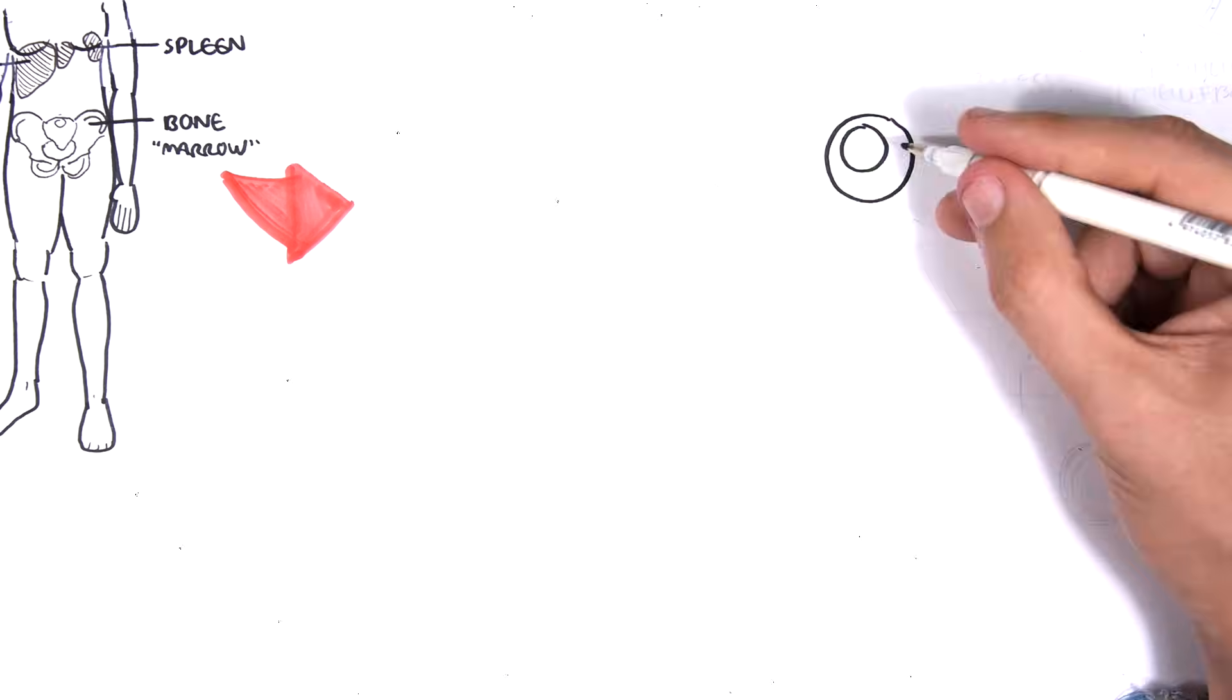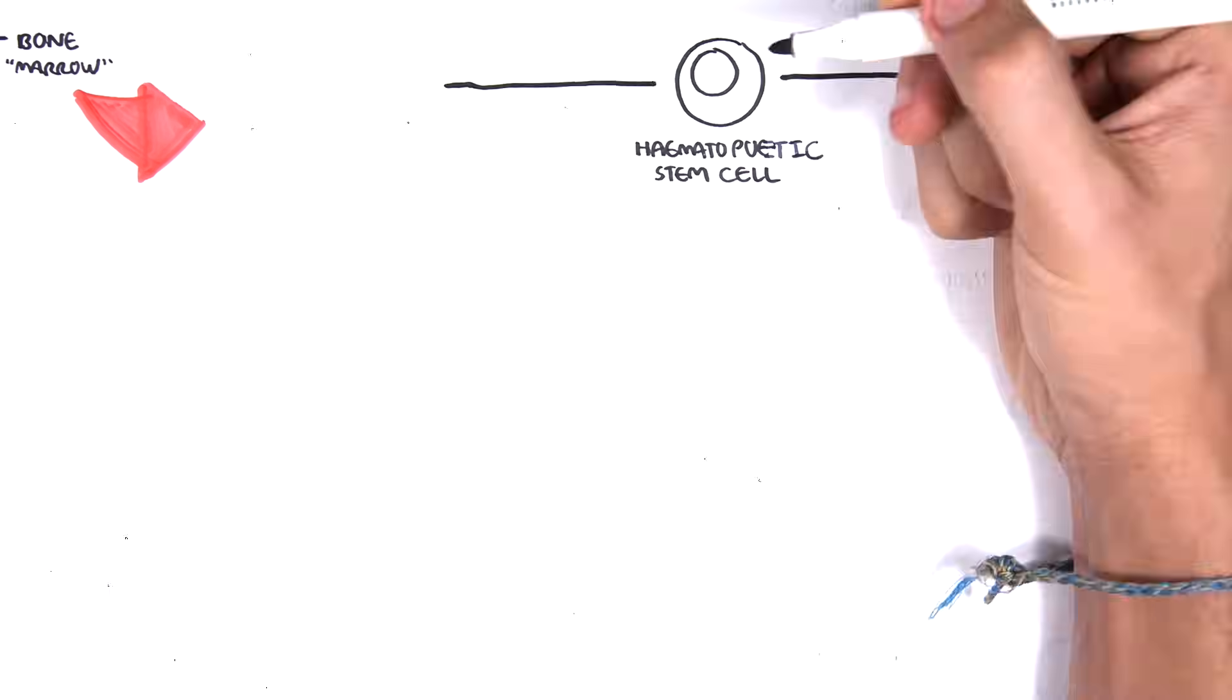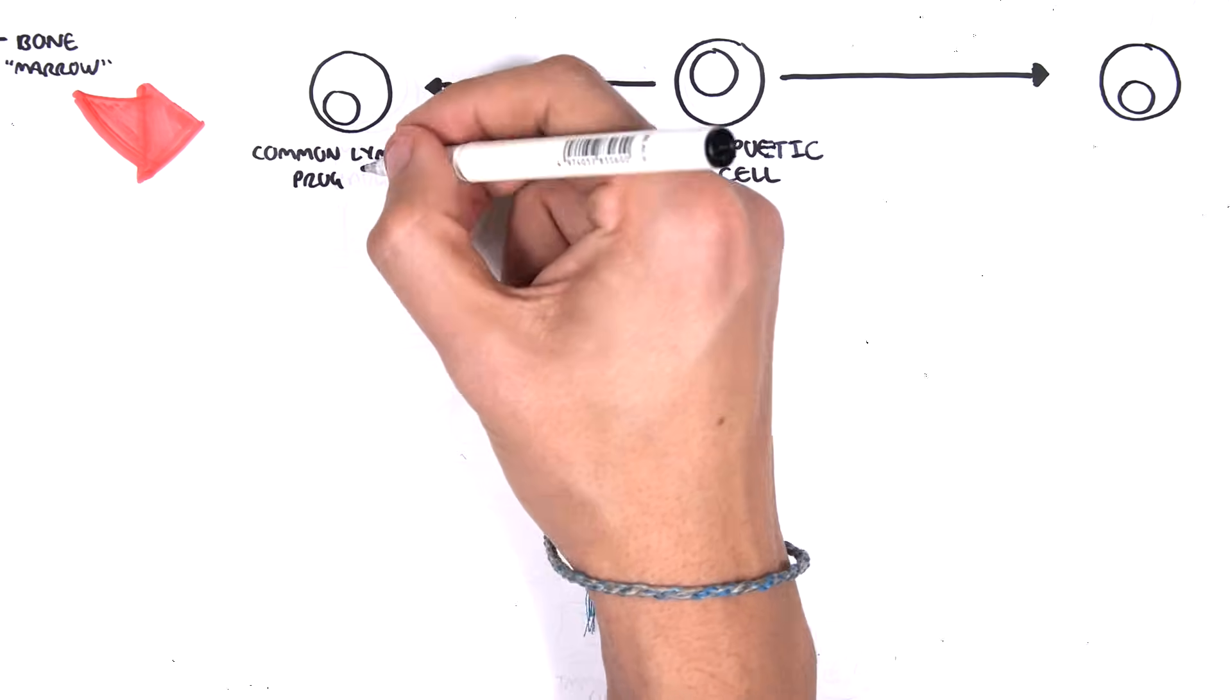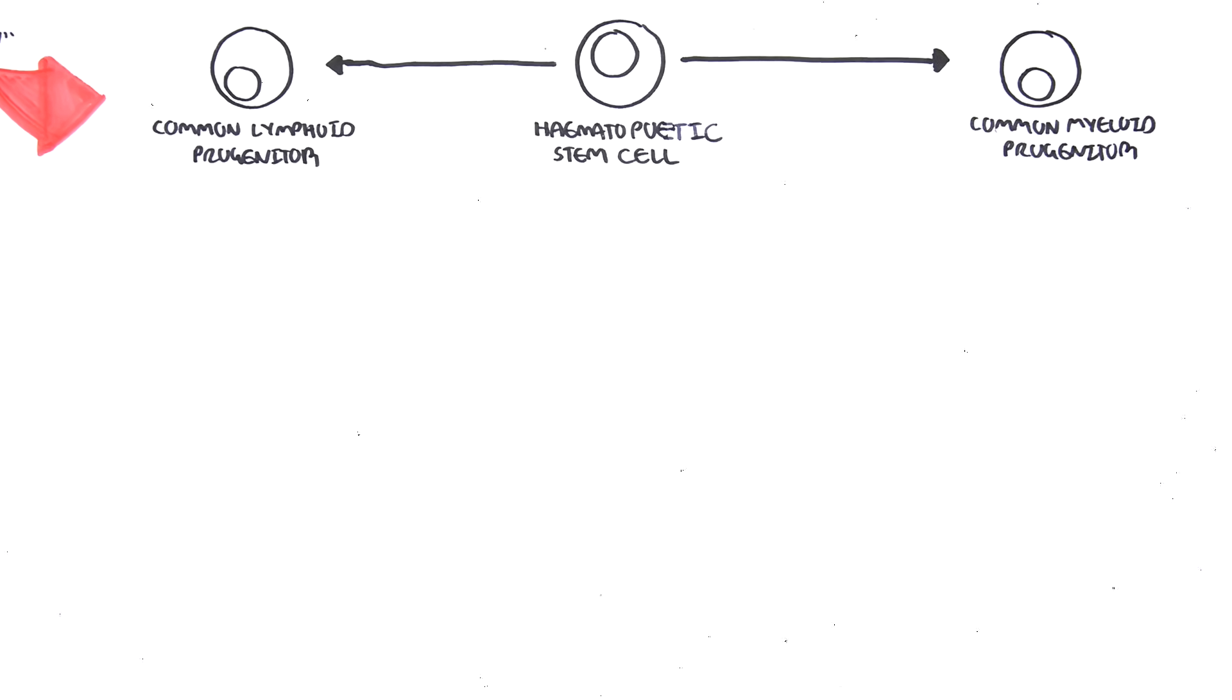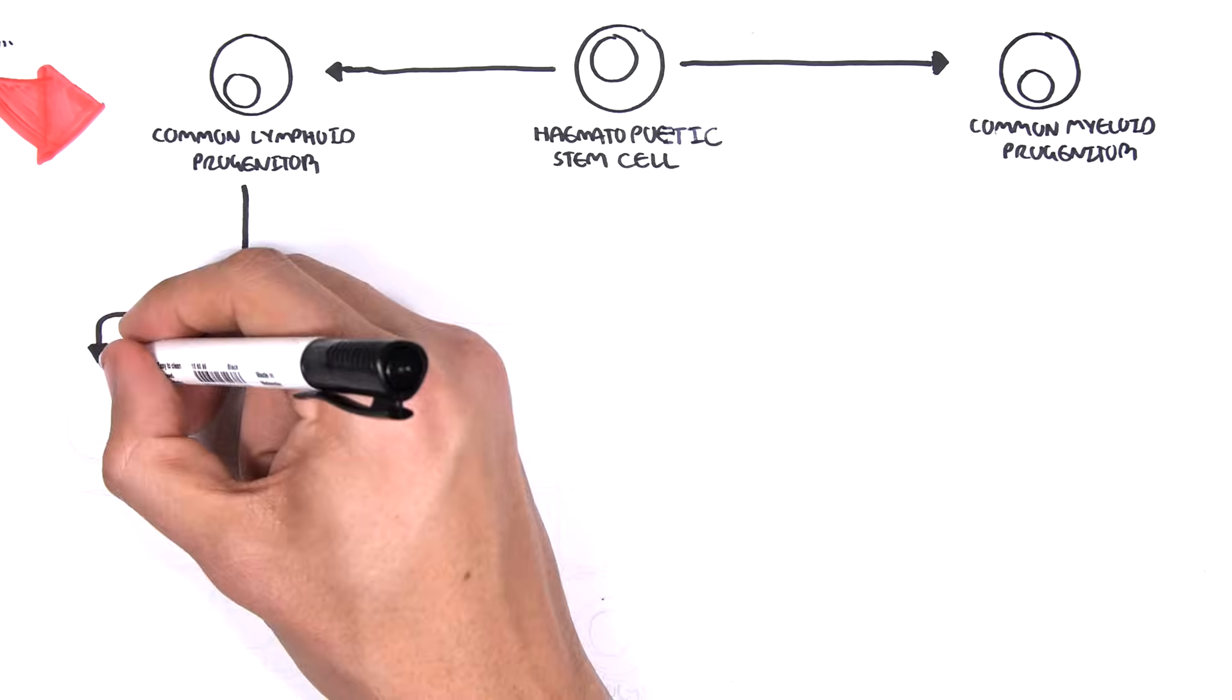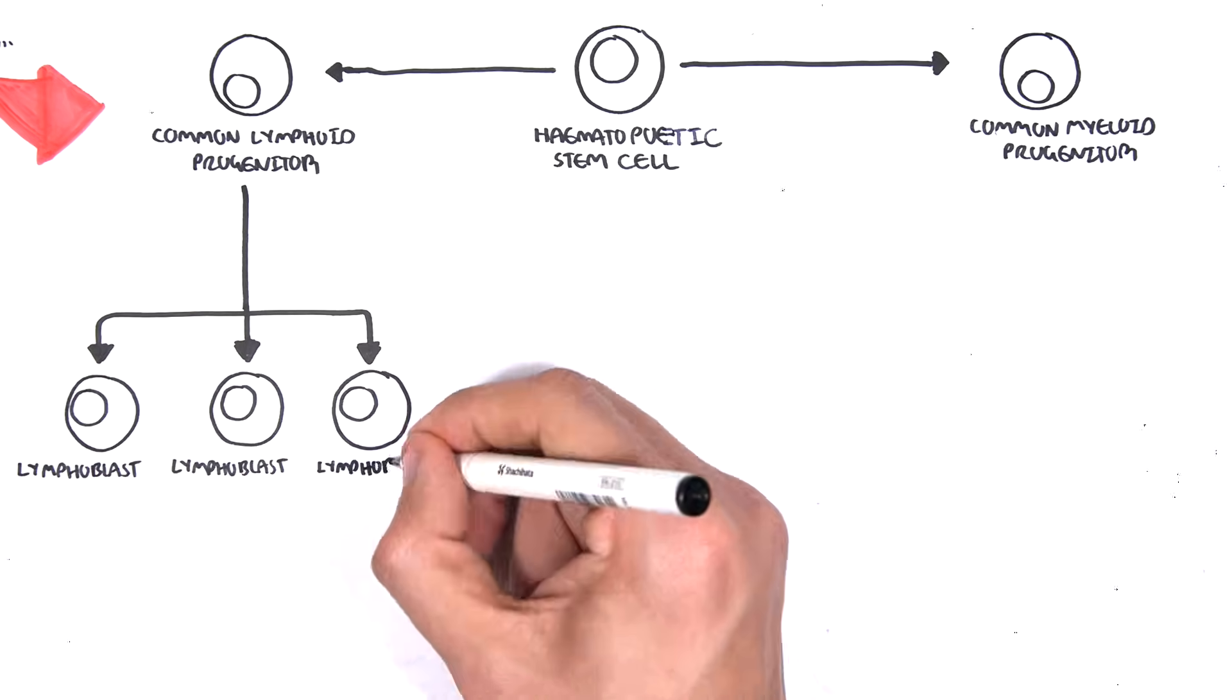Let's begin by zooming into the bone marrow. In the bone marrow we can find hematopoietic stem cells. Hematopoietic stem cells can differentiate into either a common lymphoid progenitor cell or a common myeloid progenitor cell. The common lymphoid progenitor cell then further differentiates into different lymphoblasts with different genetic profiles.